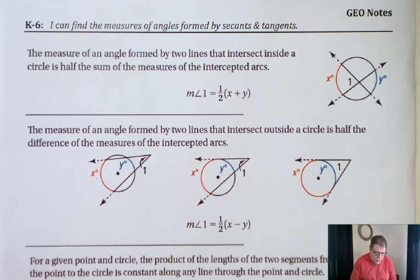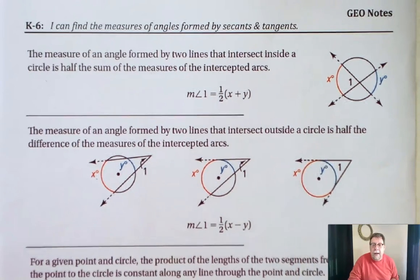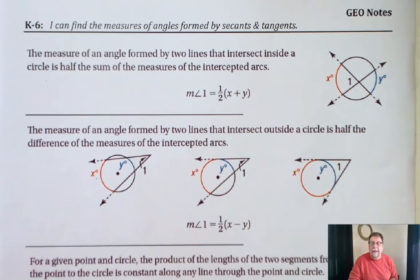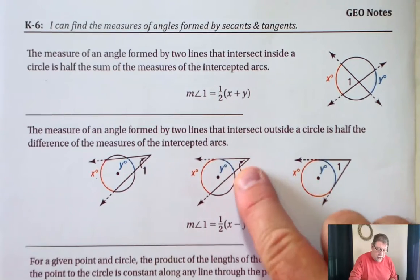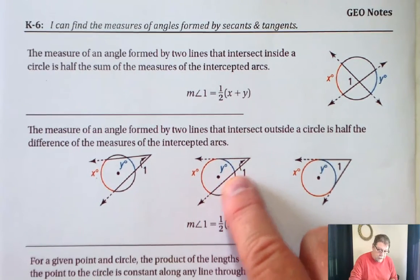You know that a tangent line is a line that touches a circle in one point, like this line right here, it touches that circle in one point. But a secant line is a line that intersects the circle in more than one place. So this line here, for example, is a secant line. It intersects in two places.